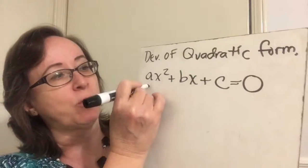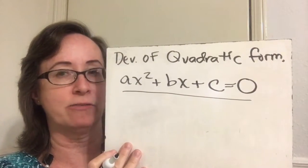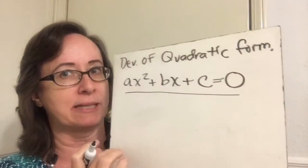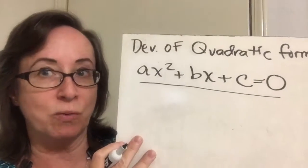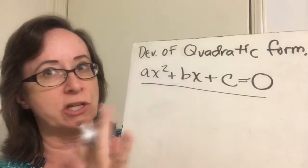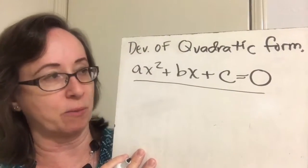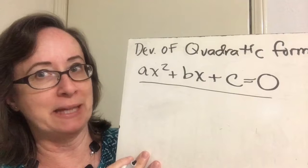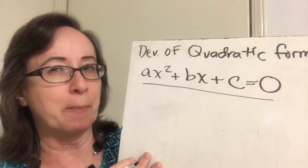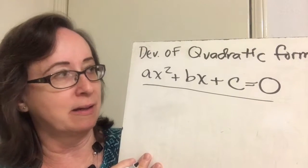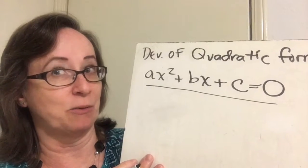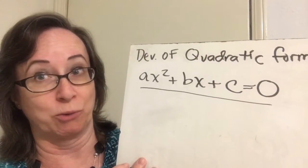Remember that our quadratic equation has a standard form, and the standard form is ax squared plus bx plus c equals zero. So in developing this quadratic equation for you, I am going to start with this generic standard form of the equation with the a, b, and c being variables, just like you see it in your textbook, and I am going to complete the square — always doing the same thing to both sides of the equation — until I get to the quadratic formula. It's really cool.